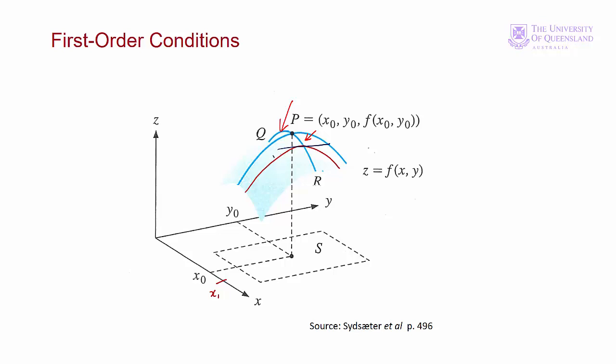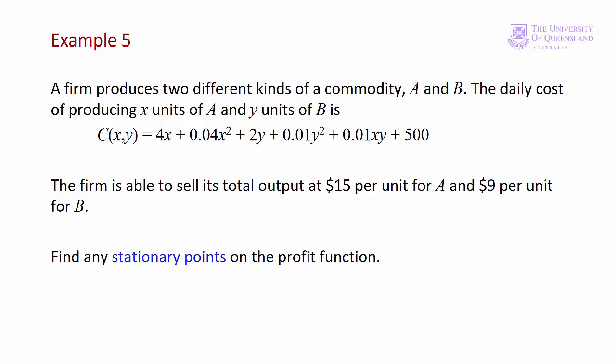Now let's look at an example of finding the stationary points of a function. We have a cost function for two goods, a and b. There are fixed costs — when both x and y are equal to zero, there are still costs. The cost of producing one good increases in a non-linear way: as x increases, the term 0.04x squared becomes more important, giving us increasing marginal costs. Similarly with y. There's also an interaction term, meaning extra costs involved in producing both a and b. The firm wants to maximise profit, and we'll find the profit-maximising values of x and y by first finding the stationary points.